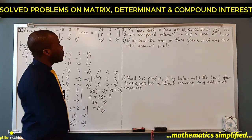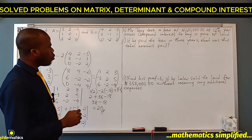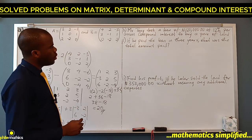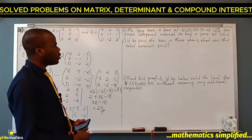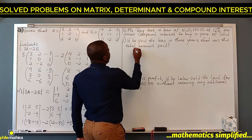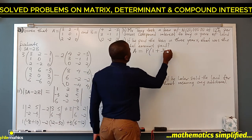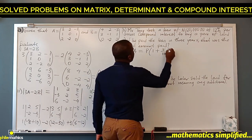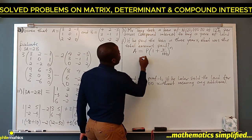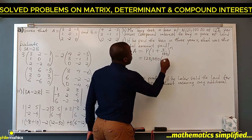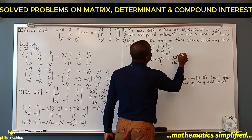Mr. Tony took a loan of 120,000 at 12% per annum compound interest to buy a piece of land. If he paid the loan back in three years, what was the total amount paid? The formula for compound interest amount is: A = P × (1 + r/100)^n. So A = 120,000 × (1 + 12/100)^3.